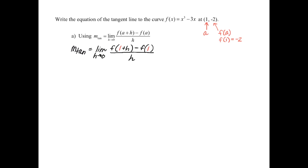Now we need to do the function notation part — this is where your algebra skills really come in handy. We need to figure out the value of f(1+h). That means we substitute 1+h into our function everywhere we see an x. So instead of x³, we get (1+h)³, minus 3 times (1+h). That's f(1+h).